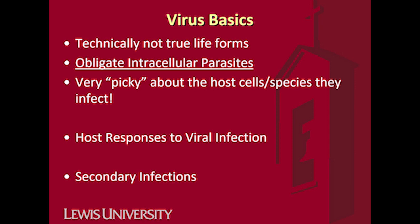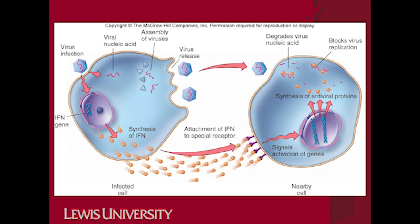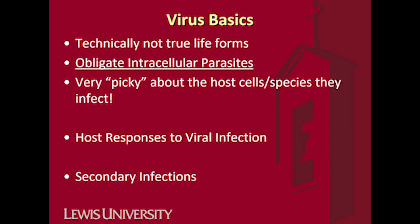A virus enlists the host cell to make more virus parts, which self-assemble into new viruses and spread to another cell. Viruses are very picky about the host cells and host species they infect, so it's rare to find a virus that can cause full-fledged disease in multiple species. Coronaviruses are particularly picky — not just about the species but the specific cells they infect. Typically they go for cells that make up the upper respiratory tract, and to a lesser extent the lower respiratory tract.